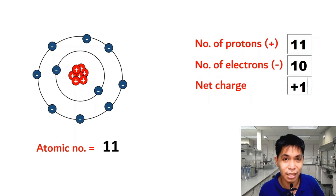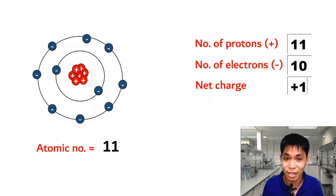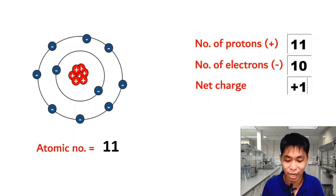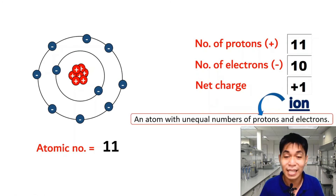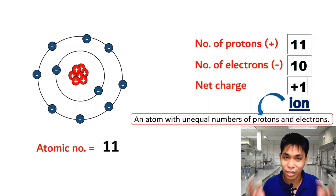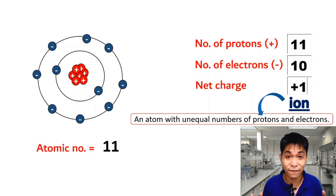Since the net charge is no longer equal to 0, we can no longer say this atom is neutral. An atom which is no longer neutral is called an ion. A neutral atom has equal numbers of protons and electrons; when the numbers are unequal, we call it an ion.